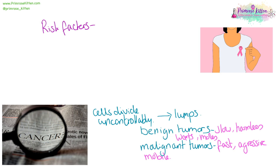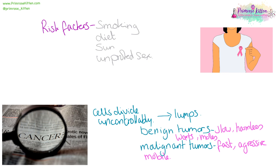There are also risk factors involving cancer and there are a lot of things that we are in control of. Smoking has large implications in lung cancer. Diet — a good diet — can reduce your risk of bowel cancer, whereas if you don't eat much fruit and vegetables you are putting your bowel at risk. The amount of time you spend in the sun can affect your susceptibility to skin cancer. And unprotected sex can leave you at risk of cervical cancer.